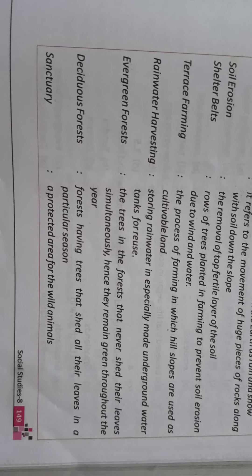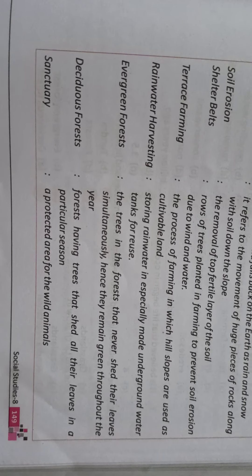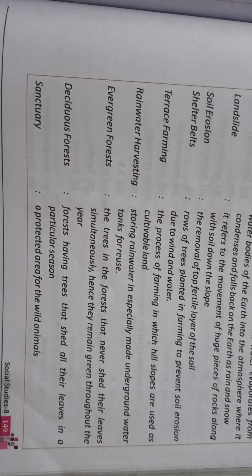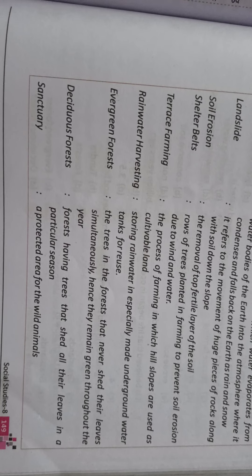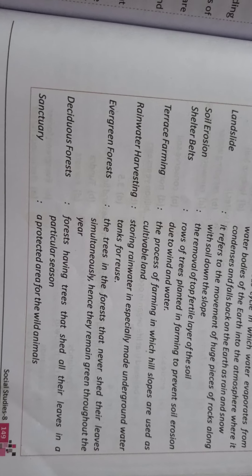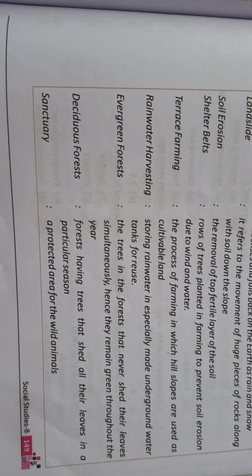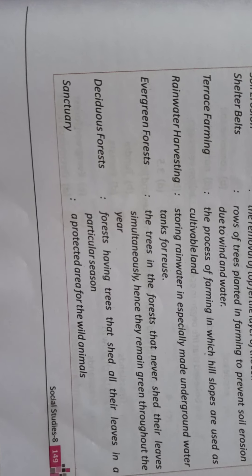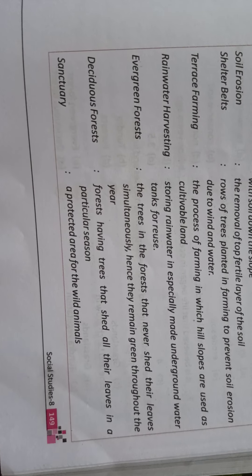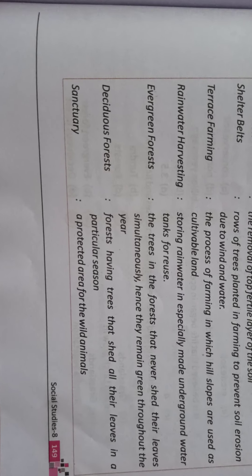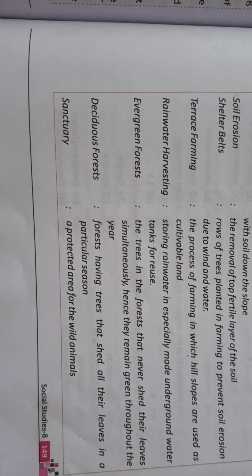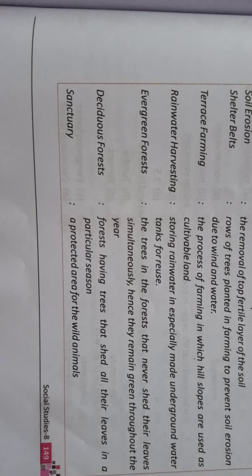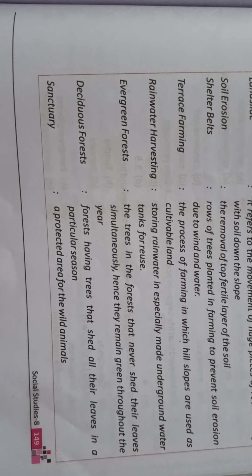Evergreen forest: the trees in the forest that never shed their leaves simultaneously. Jo trees hain wo apne patte kabhi nahi jhaadtein, hence they remain green throughout the year. Deciduous forest: forest having trees that shed all their leaves in a particular season. Deciduous forest wo hota hai jiske trees apne patte kisi particular season mein jhaad dete hain.